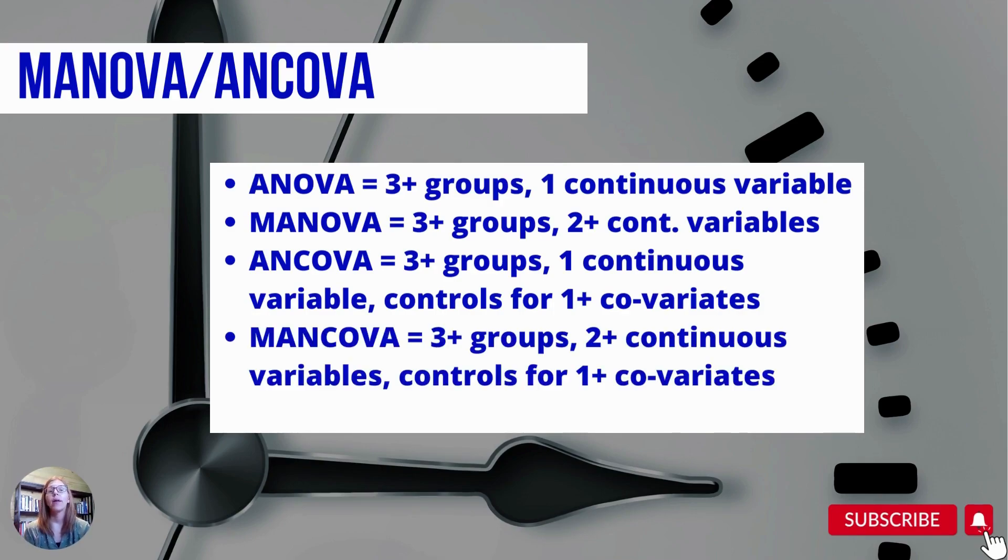And then MANCOVA is three or more groups on two or more continuous variables and controlling for one or more covariates. So you can see the level of complexity increasing here as we look at this. This can get really three-dimensional and complex.